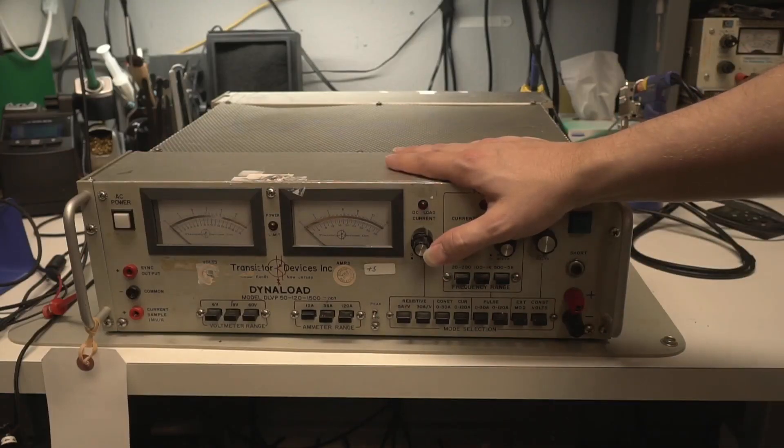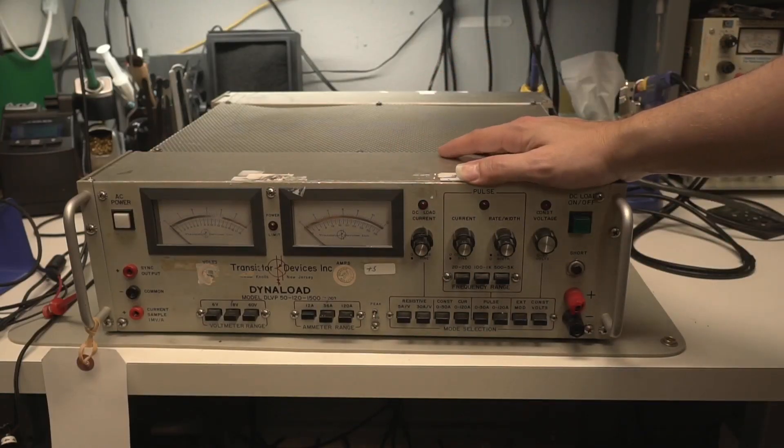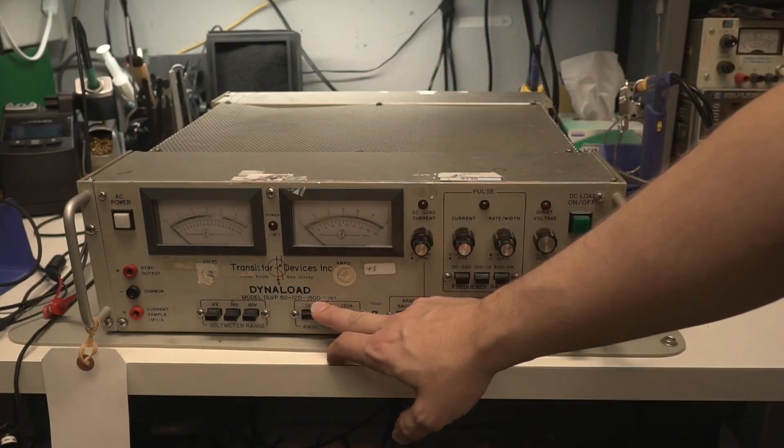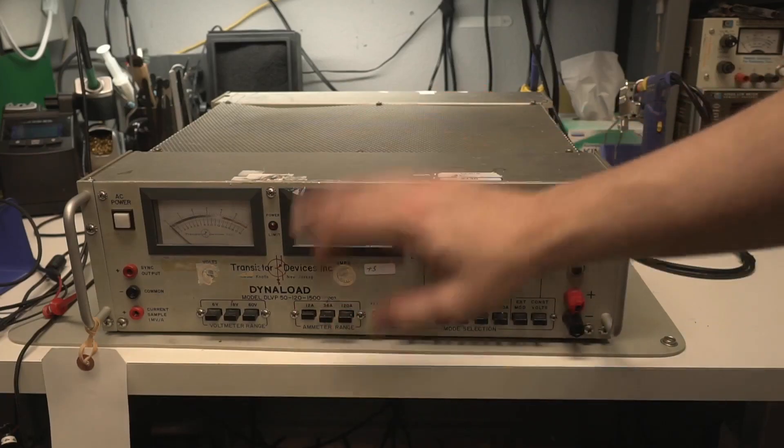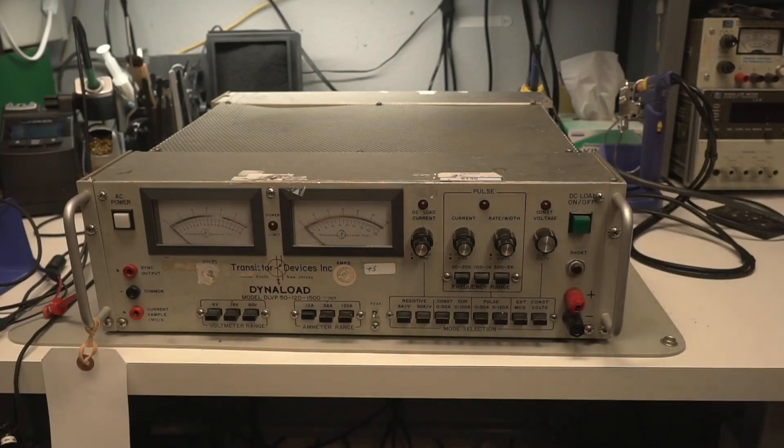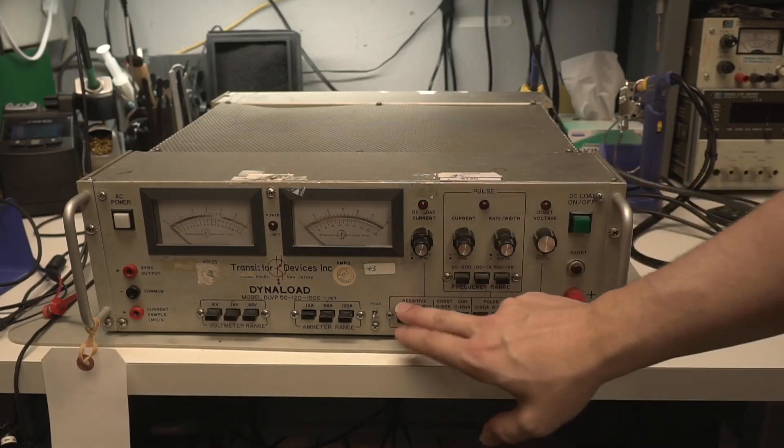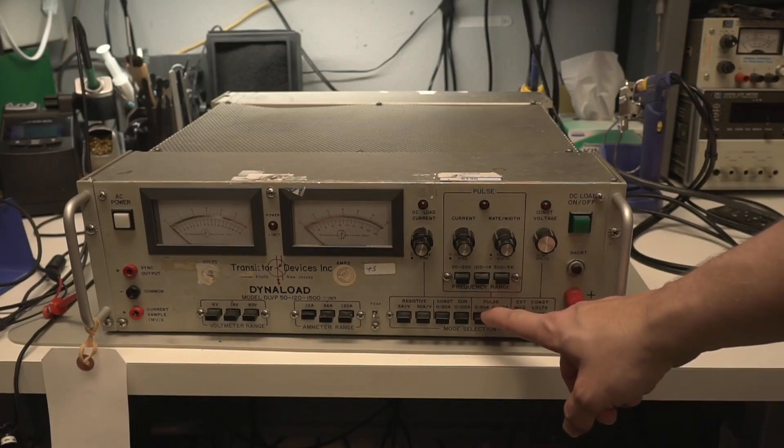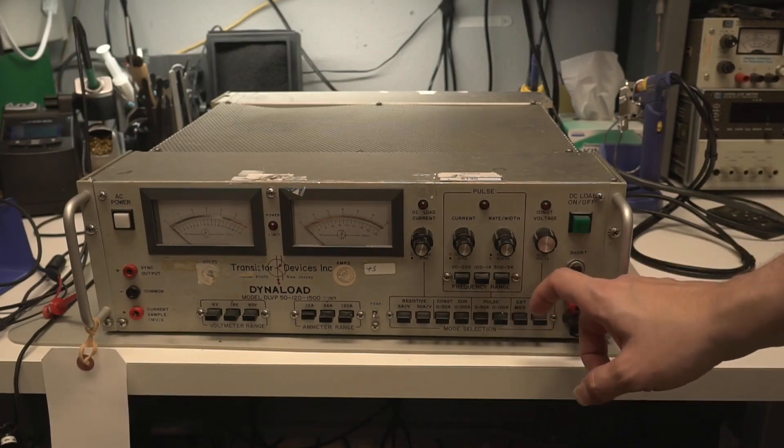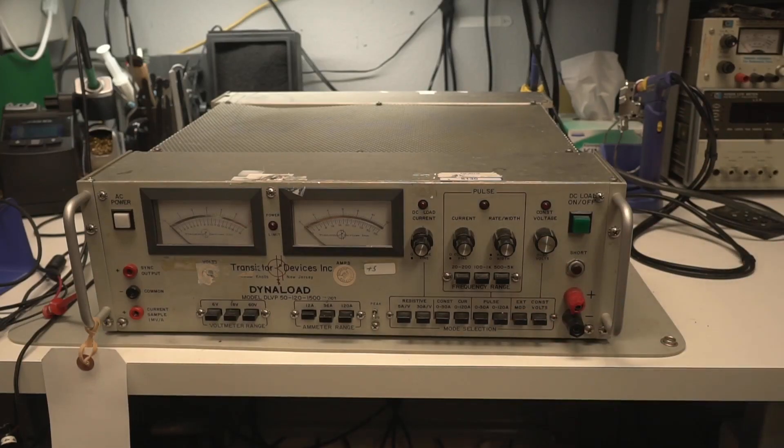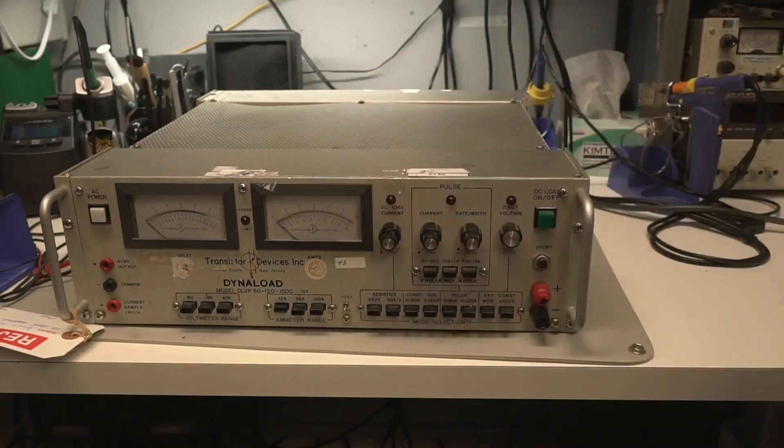All right, so let's take a quick look at this load before we open it up for repair. This is the TDI 50-120-1500 which breaks down to 50 volts, 120 amps, or 1.5 kilowatts. You have a couple of different modes it'll run in. You have resistive mode, constant current mode, and then you have pulse load and the EXT mode, and then you also have the constant voltage mode. All right, well let's tear into this thing.